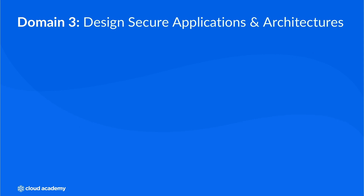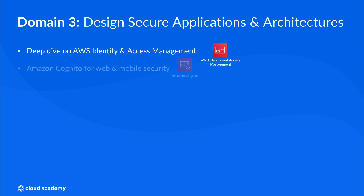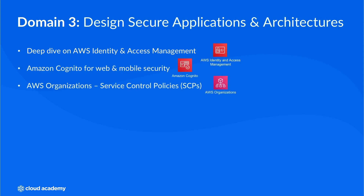Domain 3 is probably the most interesting content, because of the security aspect of AWS. You'll be assessed on three main points: how to design secure access to AWS and its resources, how to design secure application tiers, and how to recommend and select the most appropriate security services and features to protect your data. One of the main services you'll need to know is AWS Identity and Access Management, known as IAM, which we cover in detail including federated access. You'll also be introduced to Amazon Cognito and AWS Organizations, in particular the service control policies that this service offers.